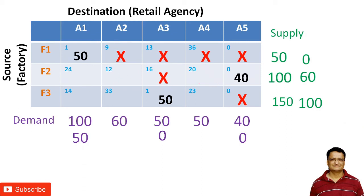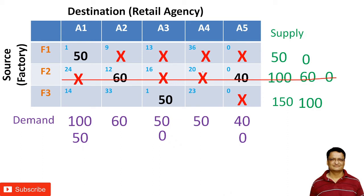Out of the remaining matrix with no cross, the minimum cost is 12. I can allocate 60 here because the demand is 60 and supply is also 60. Once I allocate 60, the supply reduces to 0. I mark a cross and this column's total demand is also fulfilled, so I mark a cross there too.